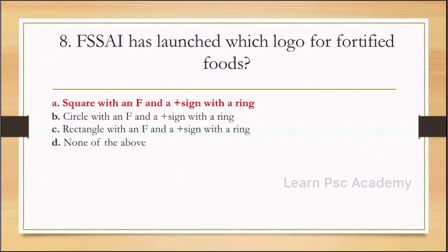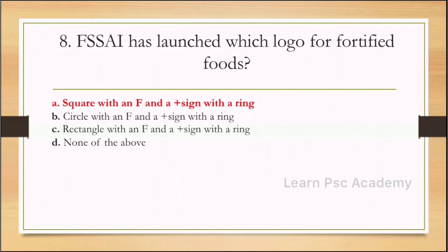Eighth question: FSSAI has launched which logo for fortified foods? Options: a square with an F and a plus sign with a ring; a circle with an F and a plus sign with a ring; a rectangle with an F and a plus sign with a ring; none of the above. Correct answer is a square with an F and a plus sign with a ring.